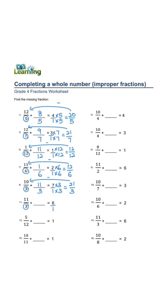denominator is 3. 6 times 3, 1 times 3 equals 18 over 3. 18 minus 11 is 7 over 3. 1 over 1,